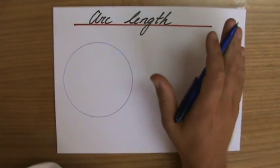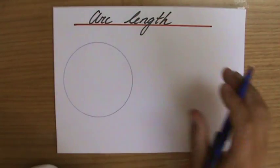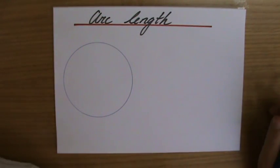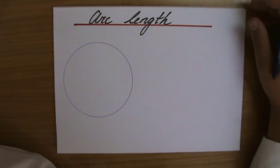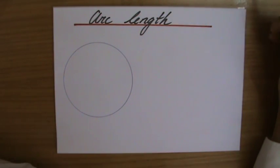We are here to discuss how to calculate the arc length, or the length of an arc. First of all, what is an arc? Well, an arc is a part of the circumference of a circle.